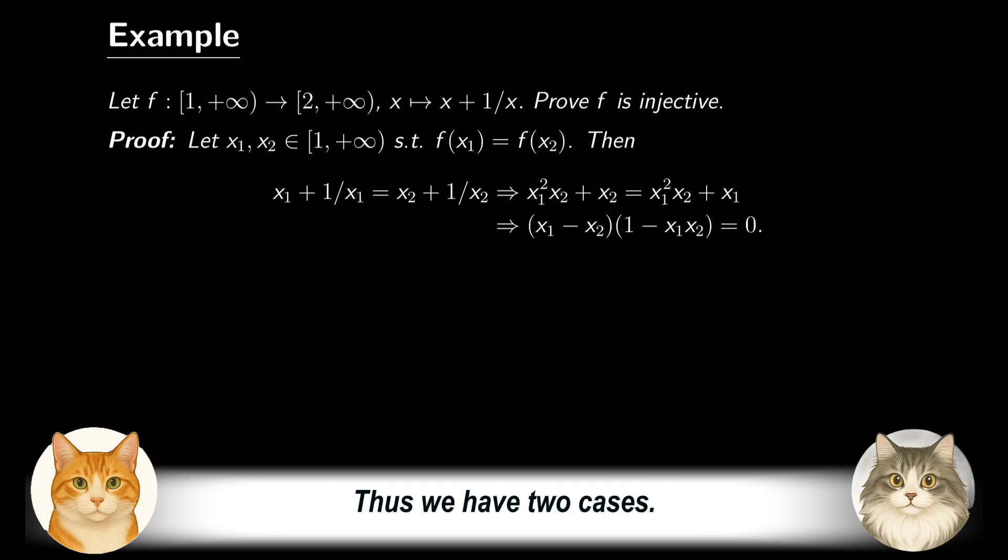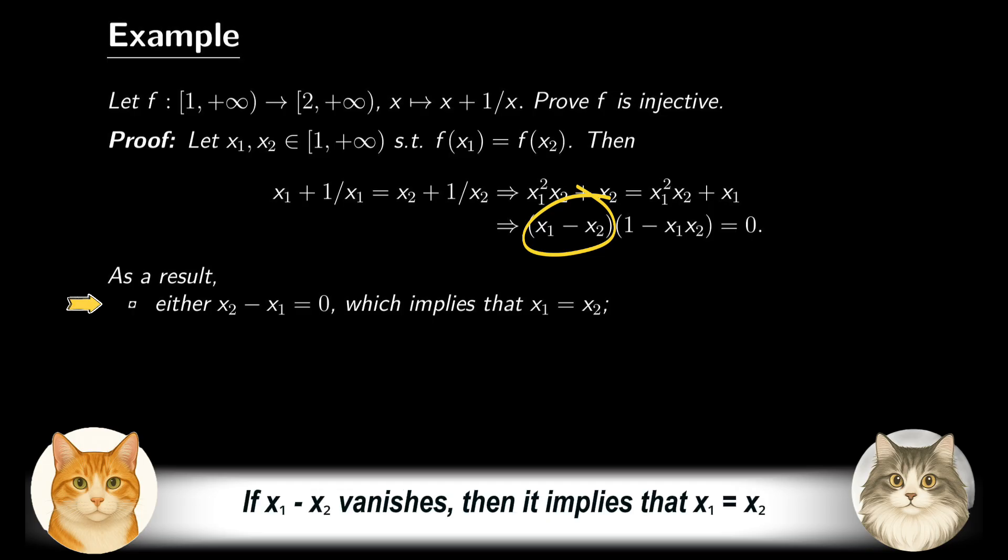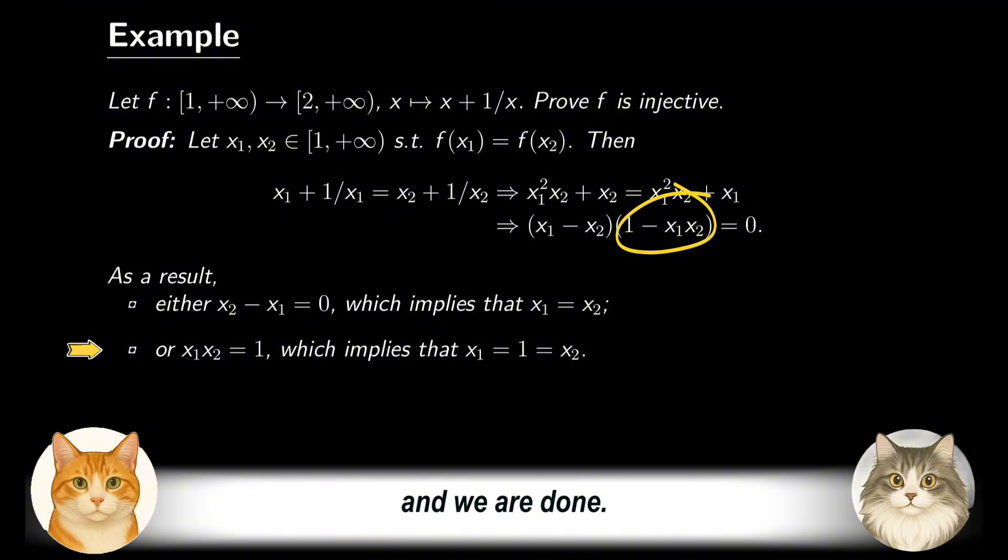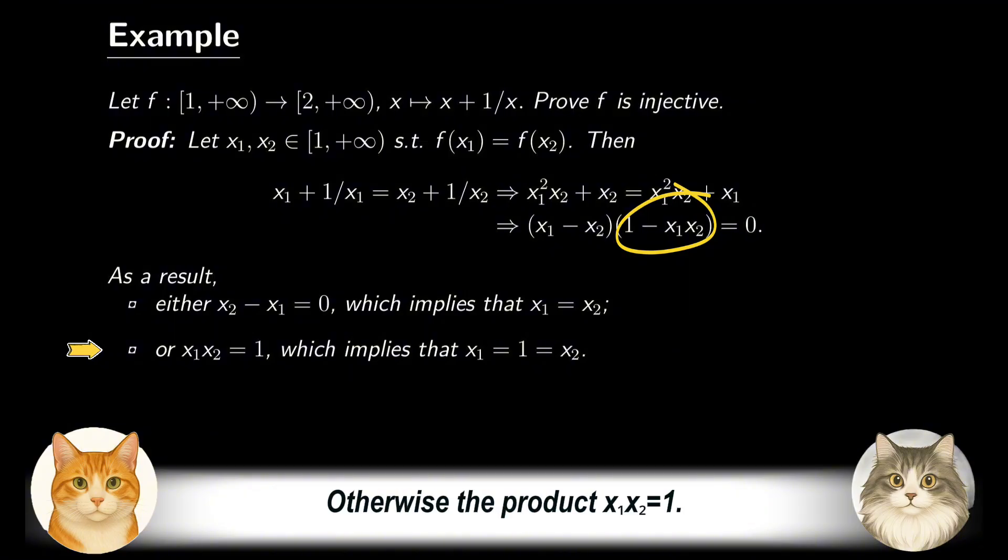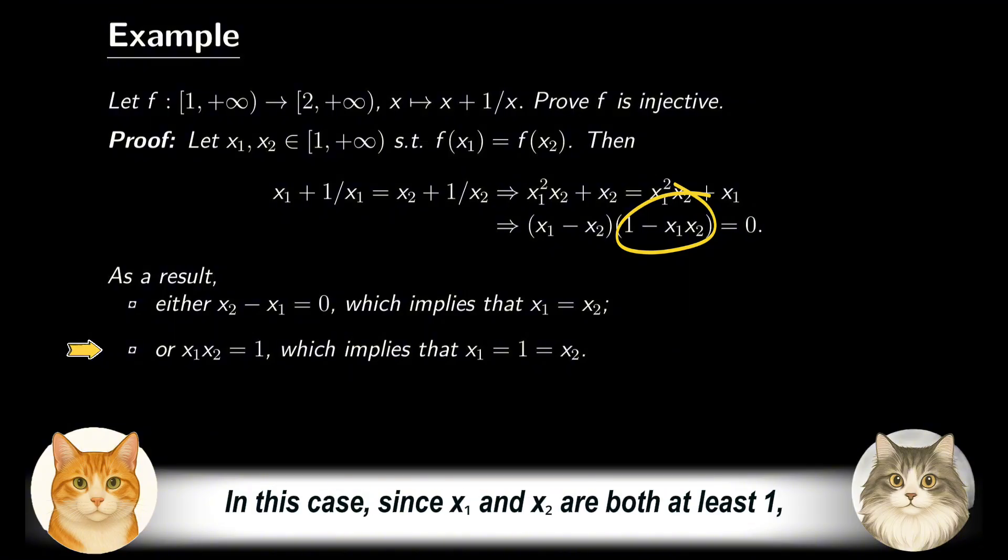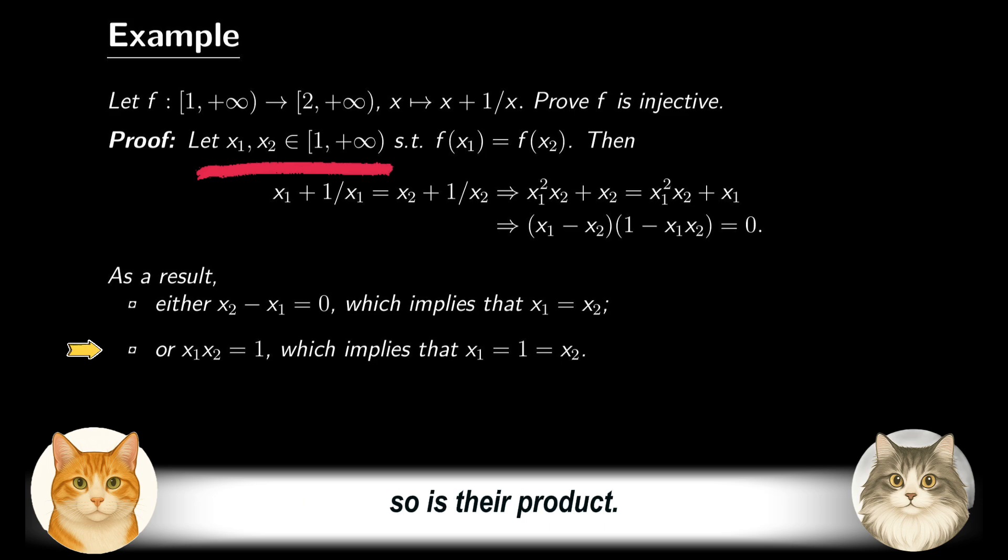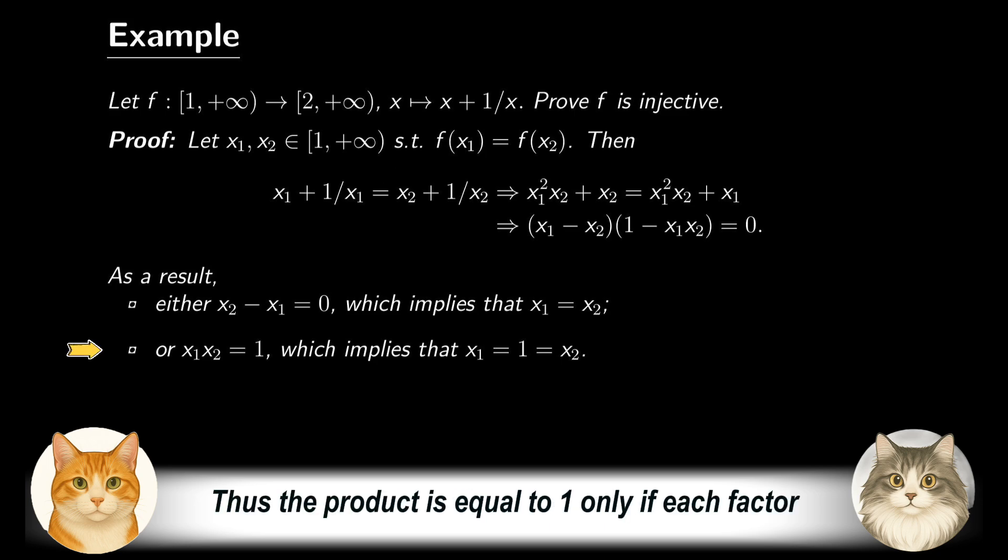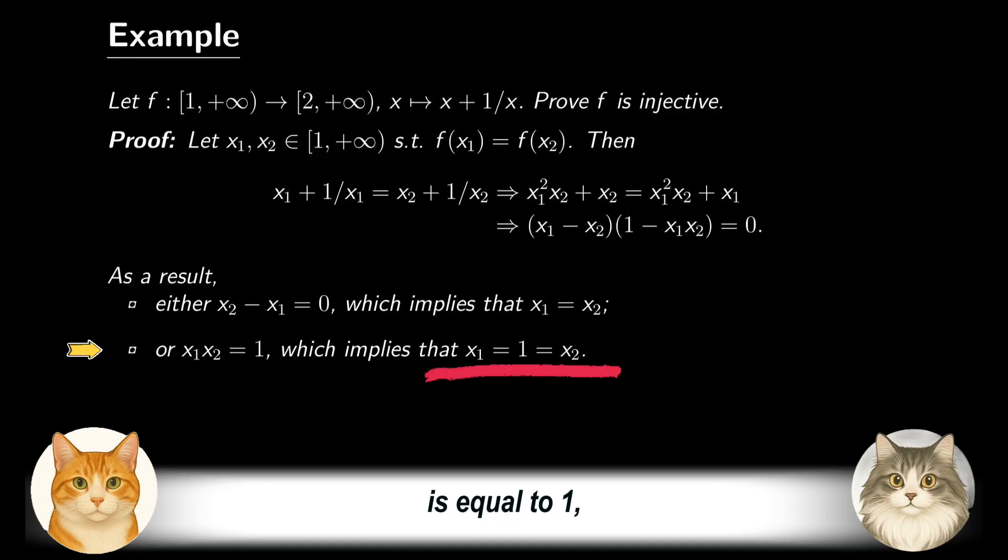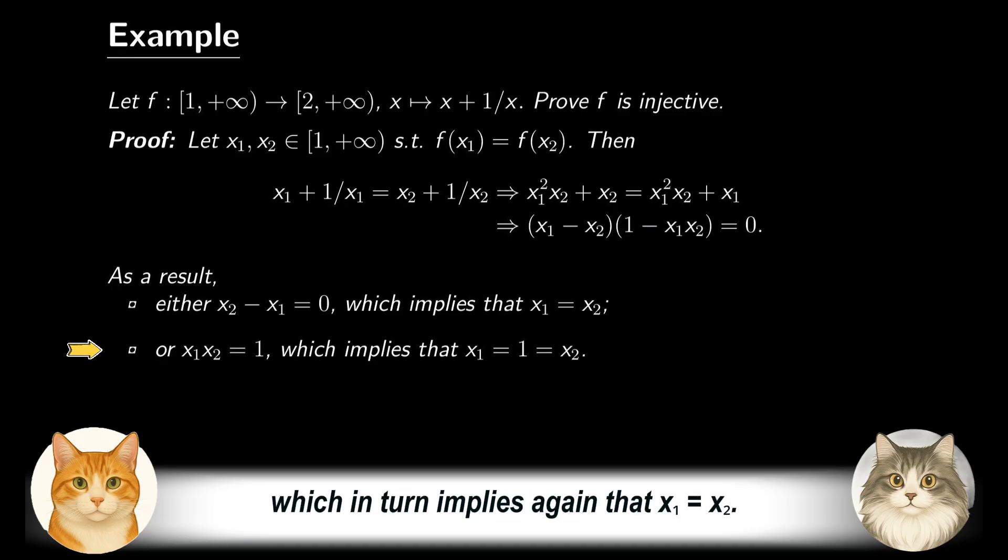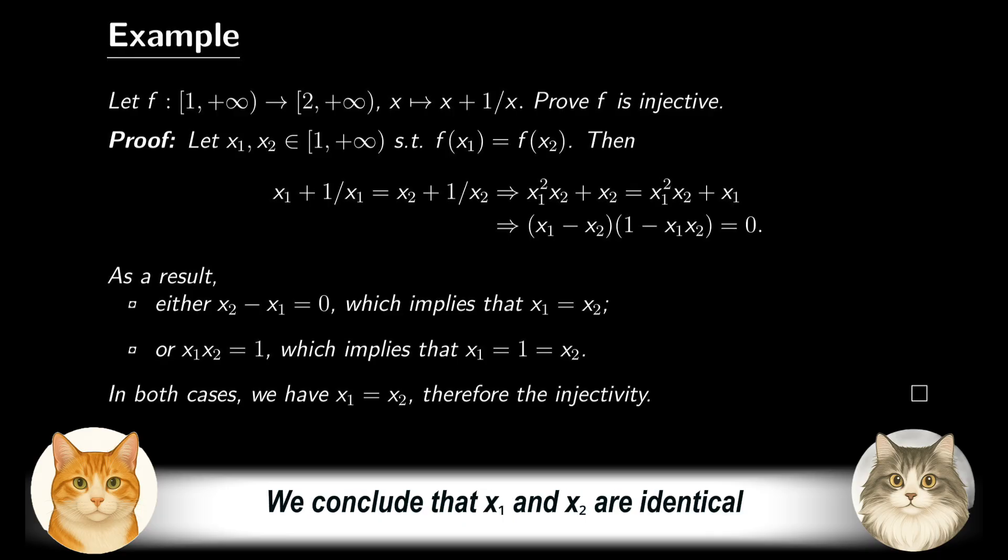Thus, we have two cases. If x₁ minus x₂ vanishes, then it implies that x₁ equals x₂, and we are done. Otherwise, the product x₁x₂ is equal to 1. In this case, since x₁ and x₂ are both at least 1, so is their product. Thus, the product is equal to 1 only if each factor is equal to 1, which in turn implies again that x₁ is equal to x₂. We conclude that x₁ and x₂ are identical in either case. This proves the injectivity.